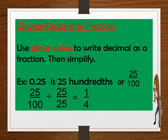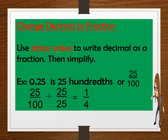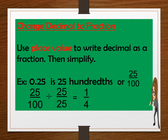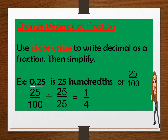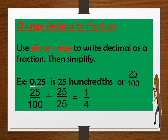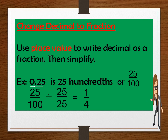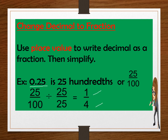To change decimal to fraction, we use the place value to write the decimal as a fraction. So 0.25 is 25 over 100. We simplify this by dividing 25 over 100 by 25. So 25 divided by 25 is 1, and 100 divided by 25 is 4. So the answer is 1 fourth.